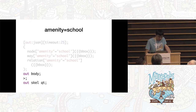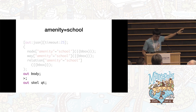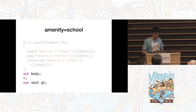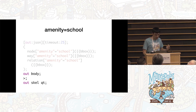Finally, at the bottom, the wizard generates output lines. 'out body' outputs the matching feature, its geometry, and its tags. The greater-than sign recurses down into the nodes that make up that feature, and the final line outputs that as well.